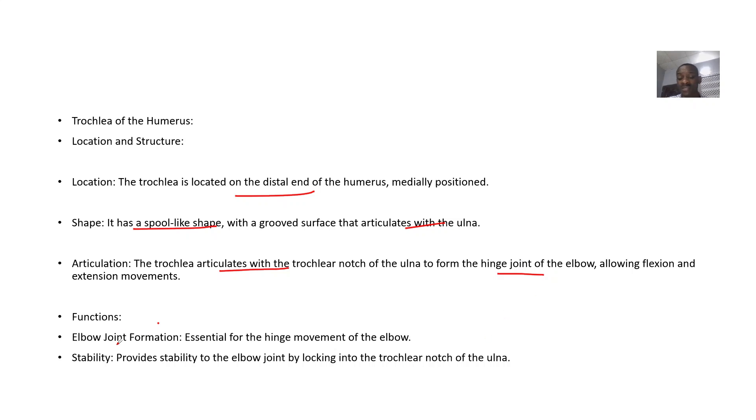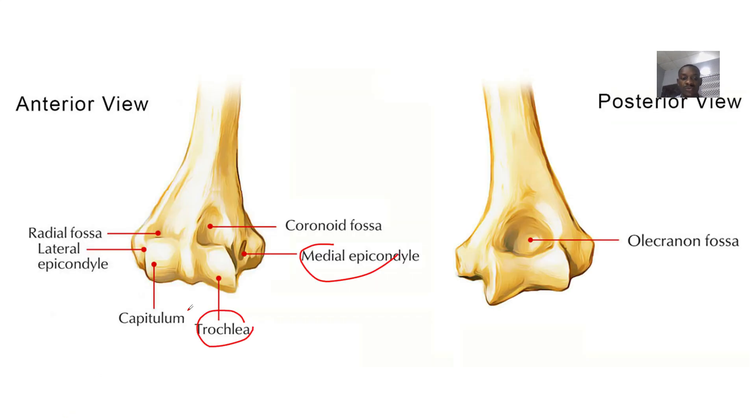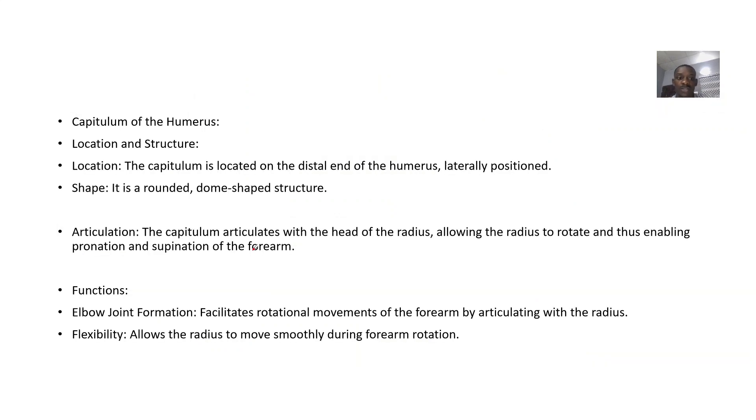Next is the capitulum of the humerus. If the trochlear is medial, then the capitulum is lateral. The capitulum is located on the distal end of the humerus. It's rounded and has a dome-shaped structure.